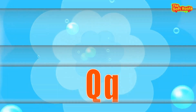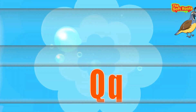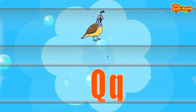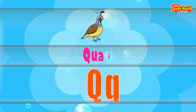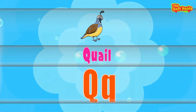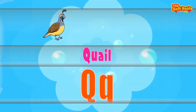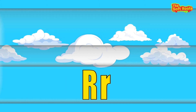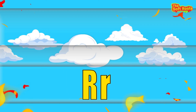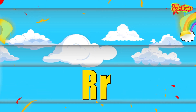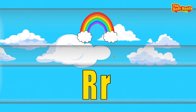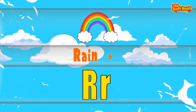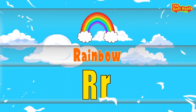Q is for Q-Q-Quail, Q-Q-Quail. R is for R-R-Rainbow, R-R-Rainbow.